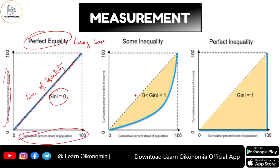If your Gini is between 0 and 1, the Lorenz curve will fall between the line of equality and this point — the blue line here represents such a Lorenz curve, showing that some inequality exists alongside some equality. If your Gini is exactly equal to 1, the Lorenz curve will coincide with the two axes — that is the case of perfect inequality.